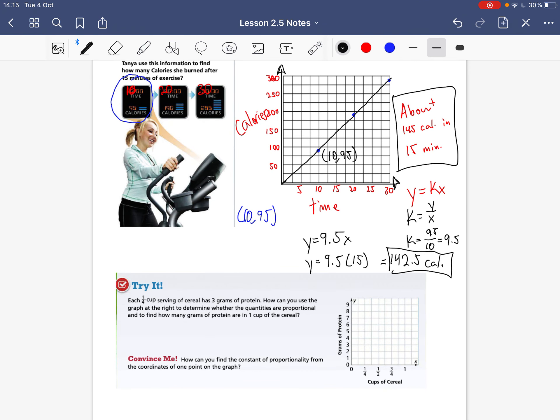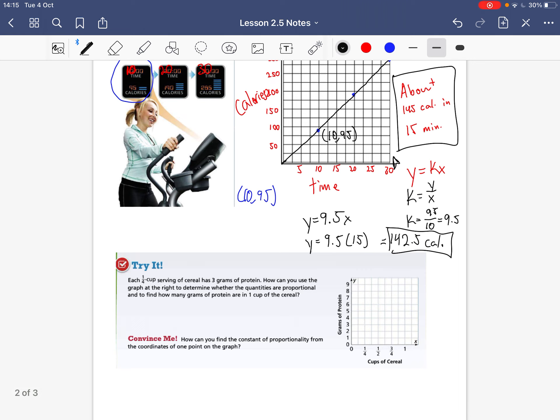All right, so let's look at the triad. Each one-fourth serving of cereal has three grams of protein. How can you use the graph at the right to determine whether the quantities are proportional and find how many grams of protein are in one cup of cereal? So one-fourth of a cup is three grams. So one-fourth of a cup is three grams. So one-half of a cup means it just keeps going up so that would be six. So one-half would be six. And three-fourths would be nine. So one-cup would be twelve.